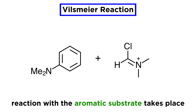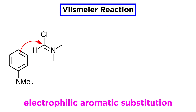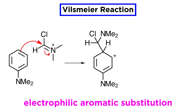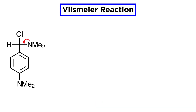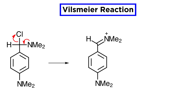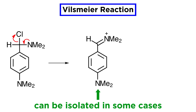Once formed, the reaction with the aromatic substrate takes place. Electrophilic aromatic substitution takes place at this electrophilic carbon, neutralizing the nitrogen and yielding this intermediate. Loss of a proton finishes up the EAS reaction. Then nitrogen uses its lone pair to kick off chlorine, which leads to the iminium ion. This can be isolated in some cases, especially if it crystallizes.